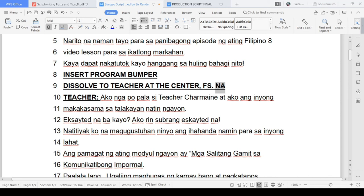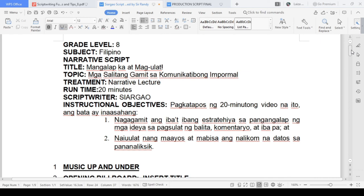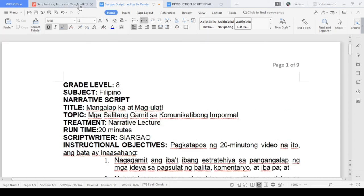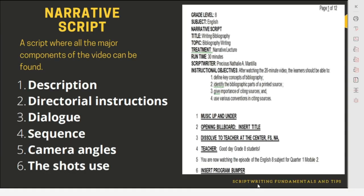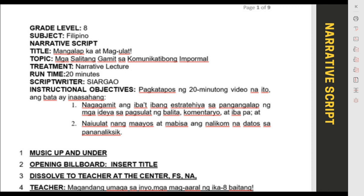So again — the description is from grade level up to the instructional objectives. The directorial instructions are written in bold, all capital letters, and underlined. The dialogue of the teacher is written normally — no underline, not capital letters, except for names.